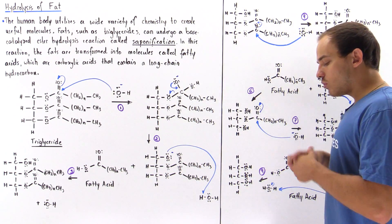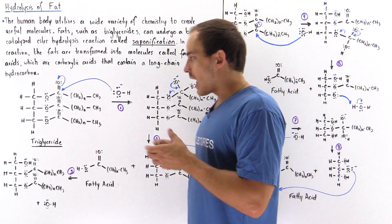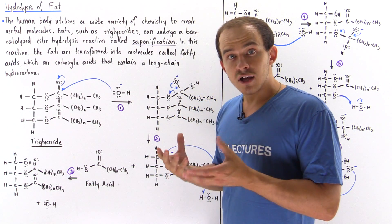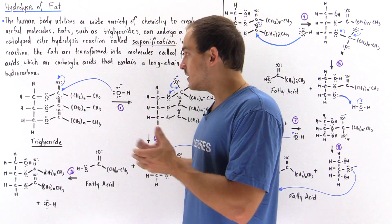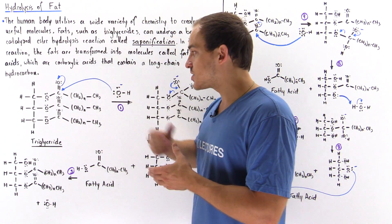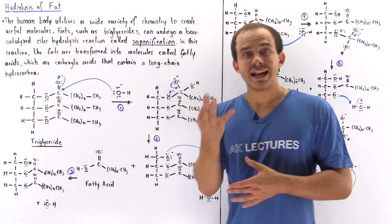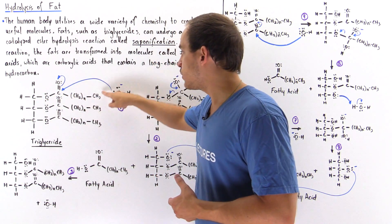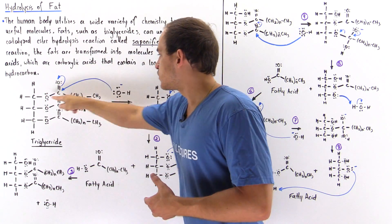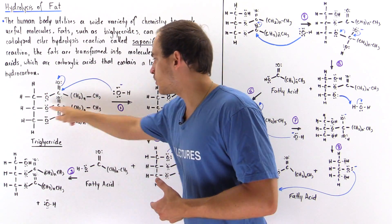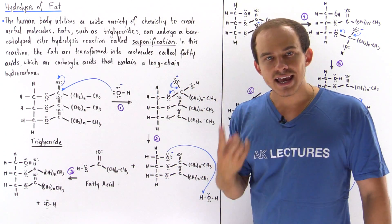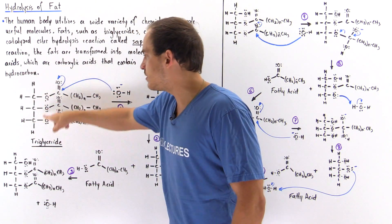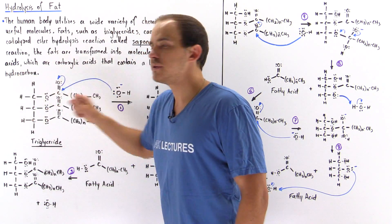If we take this triglyceride and place it within the cells of our body, the cells will transform the triglyceride — the ester — into three fatty acids, which are basically these regions here. We have one, two, and three fatty acids, as well as a single glycerol molecule, which is basically this carbon backbone.